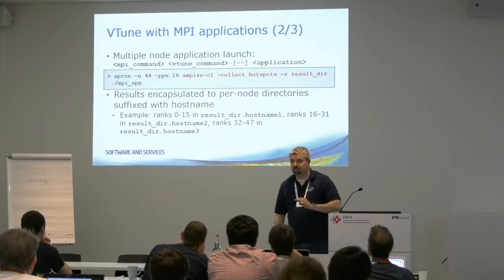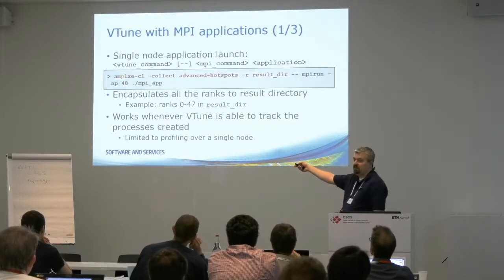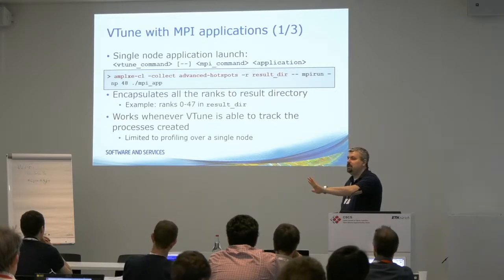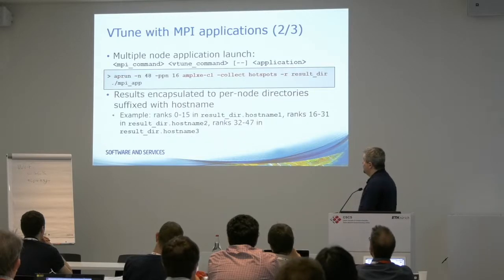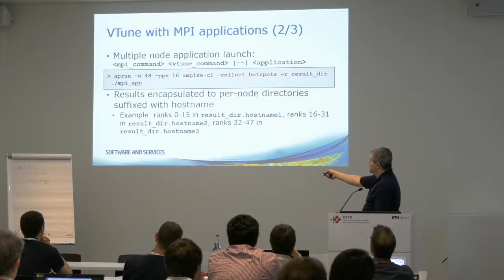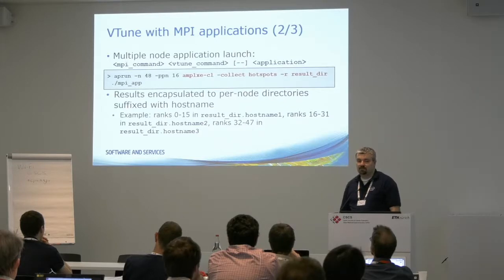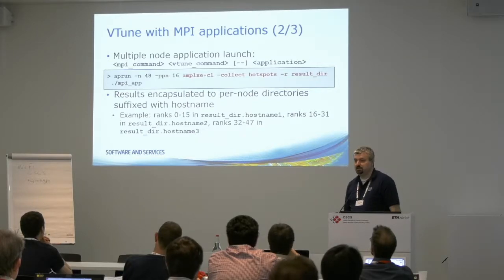Do you see the difference? Here there's only one VTune running, monitoring the local node, and whatever MPI ranks are running on that local node are monitored. In the other approach, you get as many result directories as nodes you have been working on, containing the performance data of each corresponding local node.